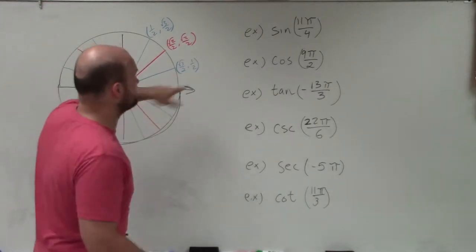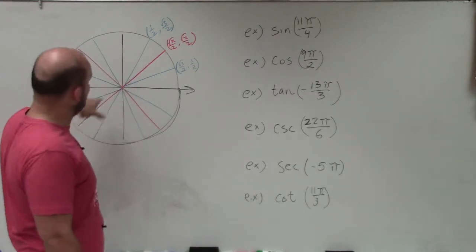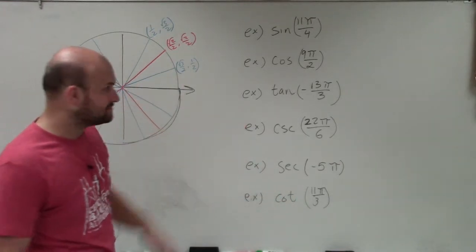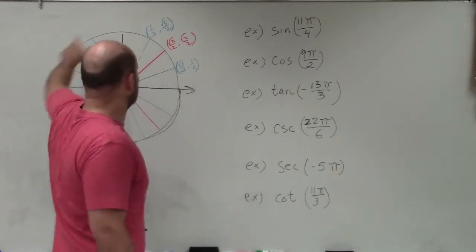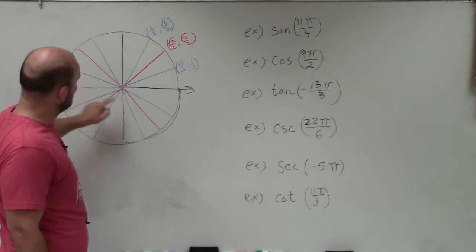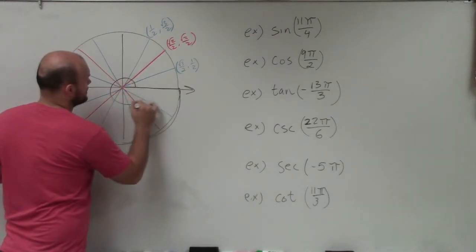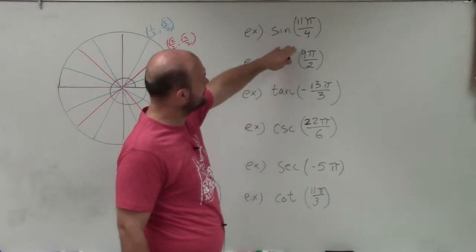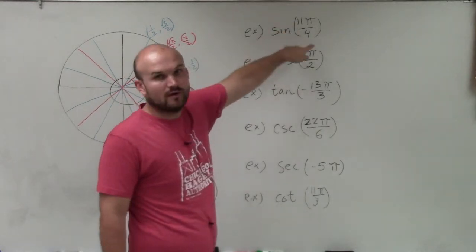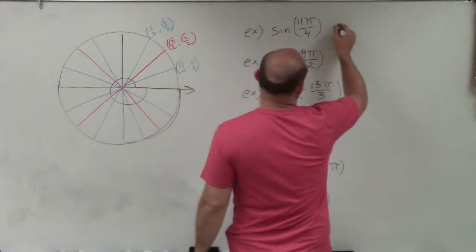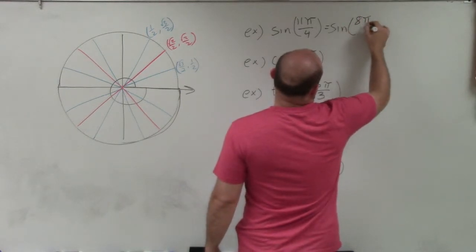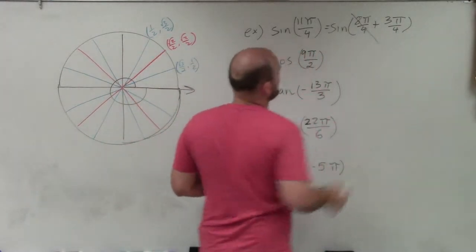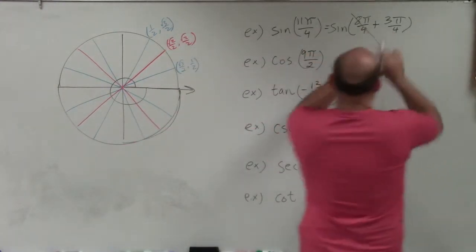When doing a problem like 11π/4, we could count pi increments all the way around, but that gets cumbersome. Instead, the best approach is to recognize that one full revolution equals 8π/4. So 11π/4 can be written as 8π/4 plus 3π/4. Since 8π/4 is just an extra revolution, really what I need to evaluate is sine of 3π/4.